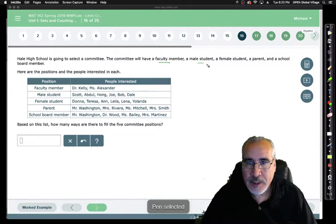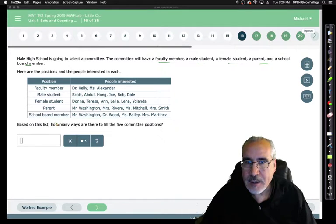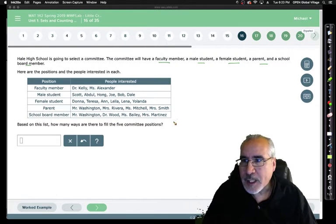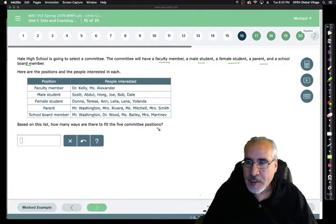So one of each of these. Here are the positions and the people interested in each. We'll have a school board. So one of each of these groups will be on this committee. Based on this list, how many ways are there to fill the five committee positions?